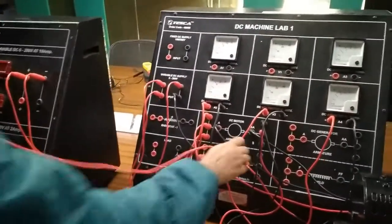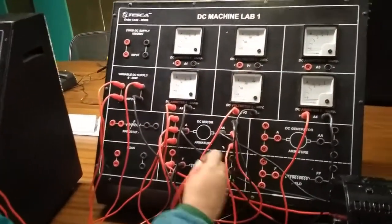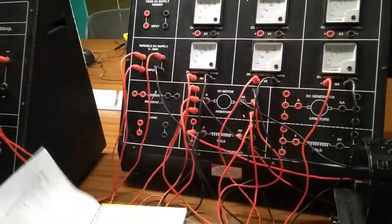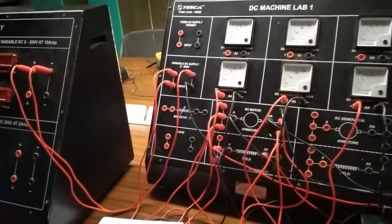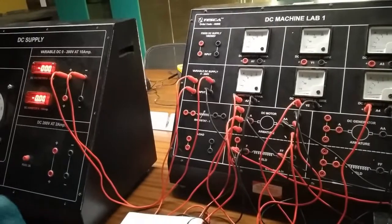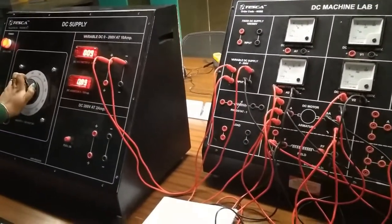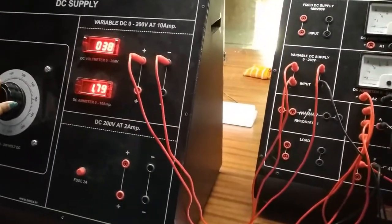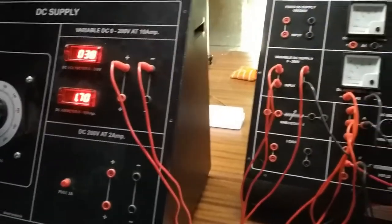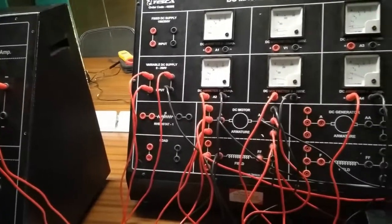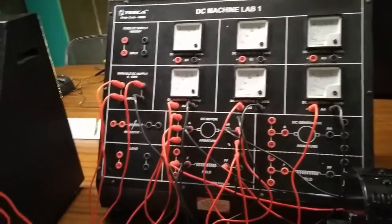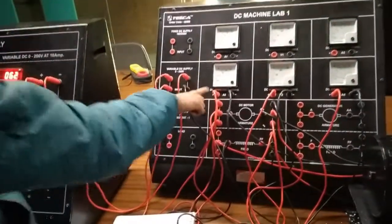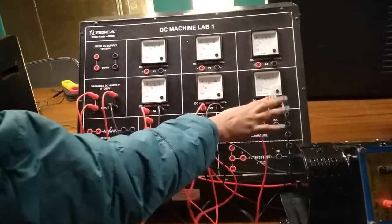Connect AA with SS. Now turn on the DC power supply and slowly increase the voltage. Observe at which voltage the motor starts running. We can see the starting voltage is higher than in the previous separately excited experiment. Increase the armature voltage in steps and observe the motor speed. With the armature voltage we can control the speed of the motor. The ammeter is showing the armature current and the voltmeter is showing the armature voltage.